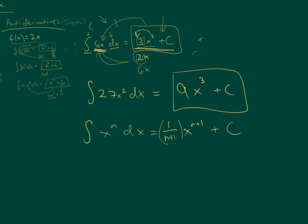Quick demonstration of that: if we have the integral of x to the 4th dx, I raise the exponent by 1, so that becomes x to the 5th. The problem is if I just take the derivative of x to the 5th, I don't get back to x to the 4th — I get 5x to the 4th. So what I need to put in front is 1 fifth. That way, when I take the derivative, I will indeed get back to x to the 4th.